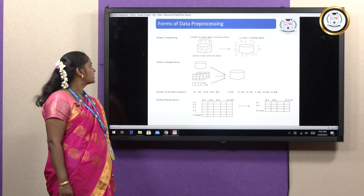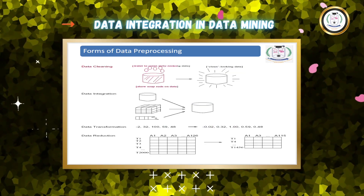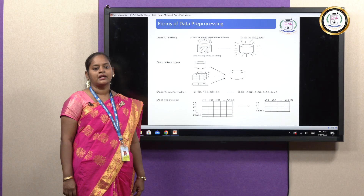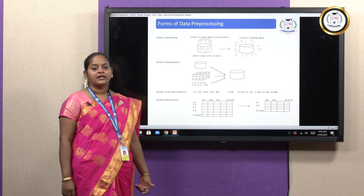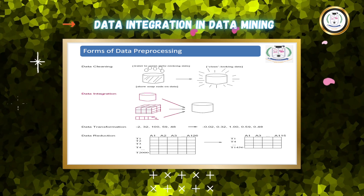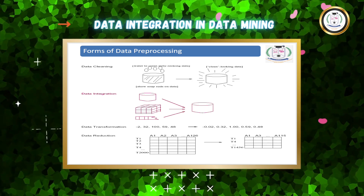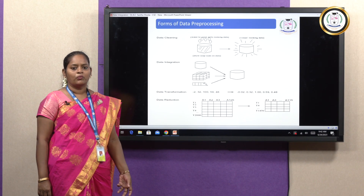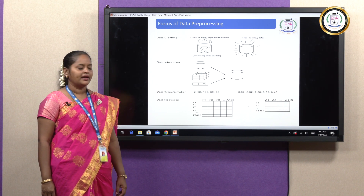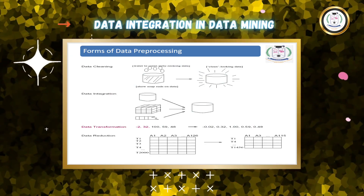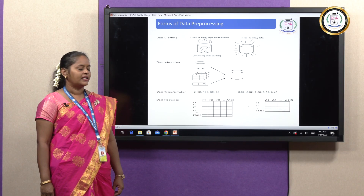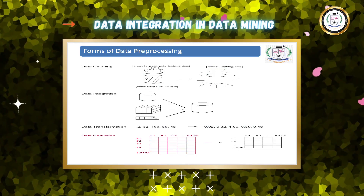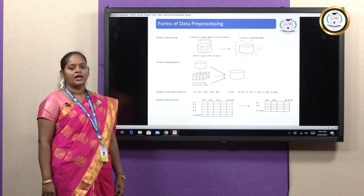Forms of data preprocessing: Data cleaning — incomplete, inconsistent, and noise removed from raw data to produce cleaned data. Integration — data from multiple sources integrated and presented in one source, called data integration. Data transformation — various normalizations applied, called data transformation. Data reduction — huge amounts of data with dimensionality reduced, called dimensionality reduction.